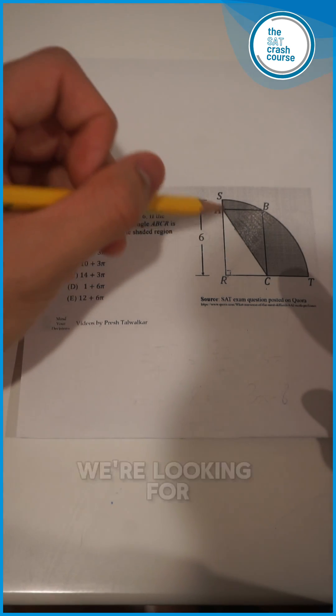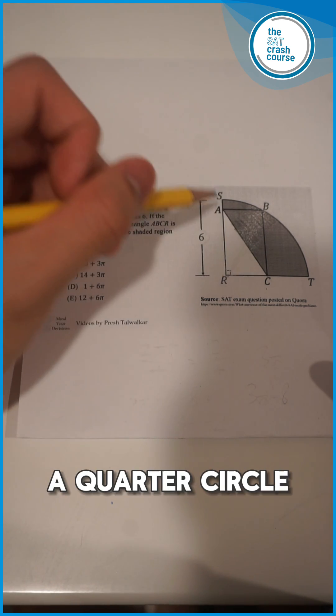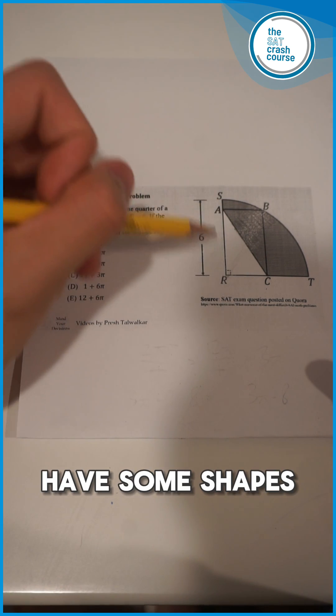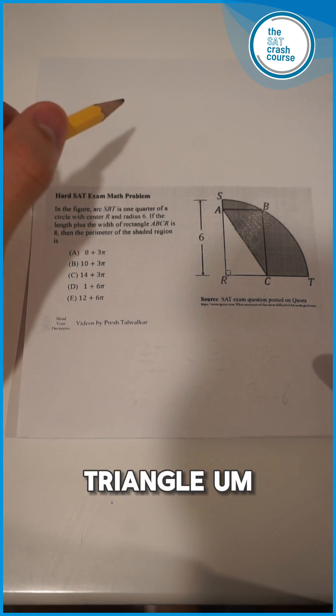In this picture, we're looking for the perimeter of the shaded region. Immediately what stands out is that SRT is a quarter circle, and then we have some shapes inscribed in it. ABCR is a rectangle, ACR is a right triangle, and ABC is a right triangle.